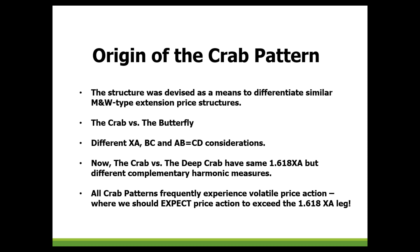This was basically to differentiate the crab versus the butterfly. We looked at the XA, the BC, and those AB equals CD considerations. But now we have the crab versus the deep crab, which is a variation of this 1.618 extension type pattern, but we look at different complementary harmonic measures.